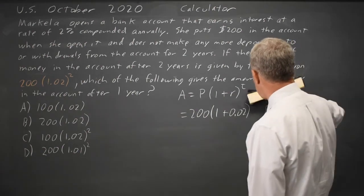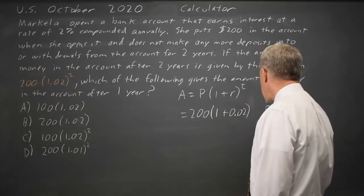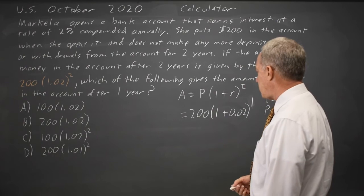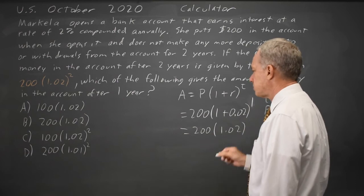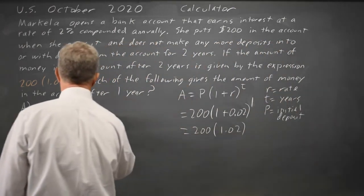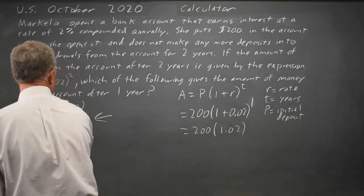I'll change that to 0.01, and I get 200 times 1.02 to the first, which is just times 1.02. That's choice B.